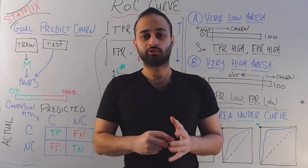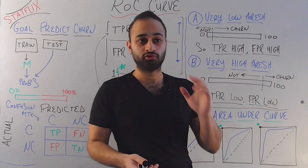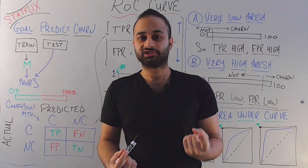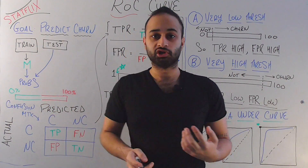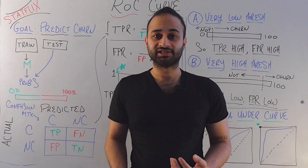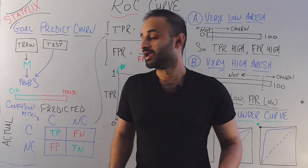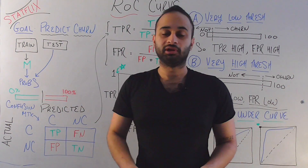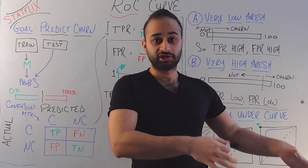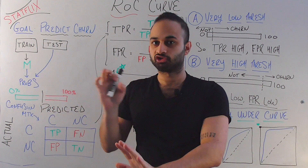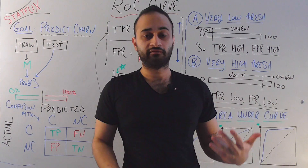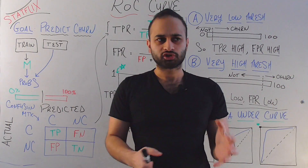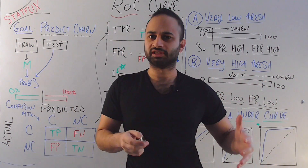Now we're actually not done, because if we want to make some kind of decision — deciding which customers to send free things to — we need to do one last thing: draw a line somewhere between zero and 100, called a cutoff or threshold. Everyone to the left of that line does not get any freebies, and everyone to the right does. For example, at 50%, if my model predicts less than 50% chance of churning, I assume they won't churn; above 50%, I'll try to keep them. That threshold is really up to us, and when we change it, interesting things happen.